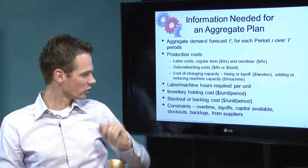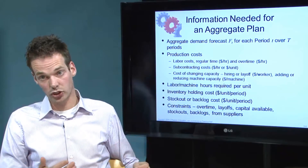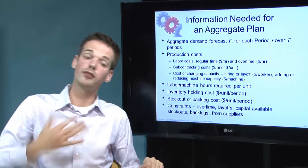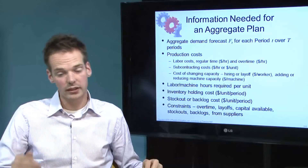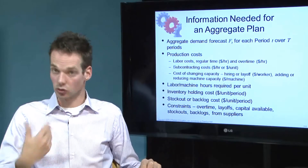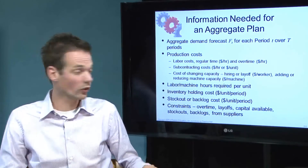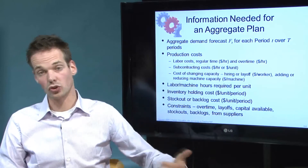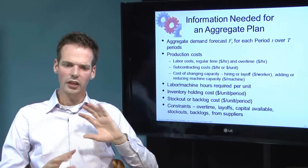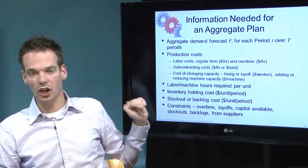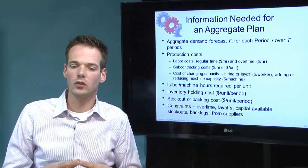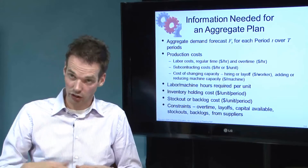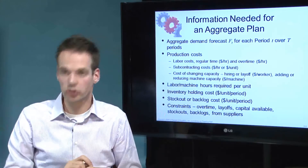The fourth constraint: do we want stock-outs? The fifth: do we want backlogs, and if so, how much? This is related to service level agreements. All of this is related to the other suppliers in the chain. These inputs are very important when establishing a solution for an aggregate plan across the whole supply chain.